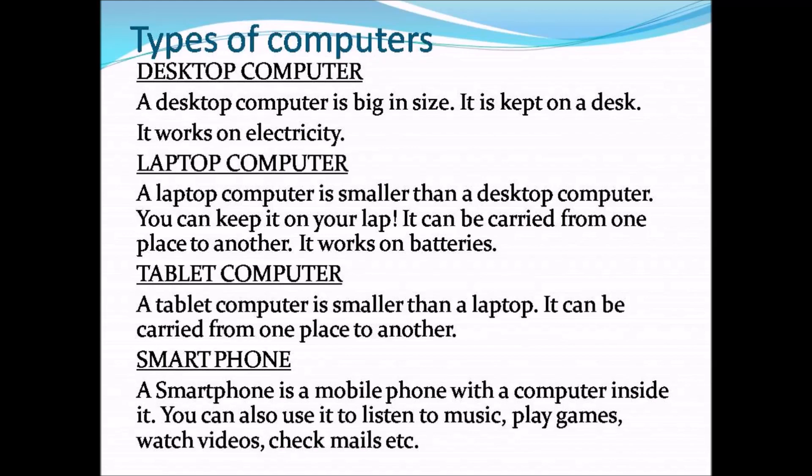The third one is the tablet computer. A tablet computer is smaller than a laptop. It can also be carried from one place to another. Tablet computers have touch screens — you can give orders by touching the screen itself. It works on batteries. The last one is the smartphone. A smartphone is a mobile phone with a computer inside it. We can use it to listen to music, play games, watch videos, and check mails.